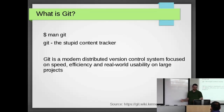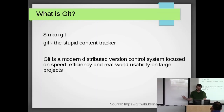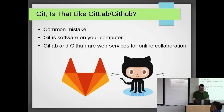So first off, if you run 'man git', it is Git, the stupid content tracker. That's actually in the man page — it's kind of funny. But what is it? It's a version control system. There's the technical definition off Wikipedia, or kernel.org, I guess.